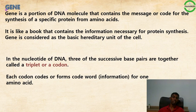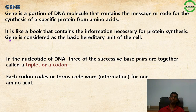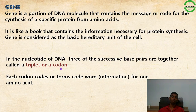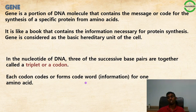A gene is a portion of the DNA molecule containing the code for the synthesis of a specific protein from amino acids. It is considered the basic hereditary unit of the cell. In the DNA nucleotide sequence, three successive base pairs together are called a triplet or codon, and each codon codes for one amino acid.